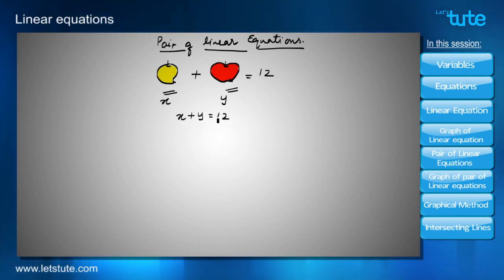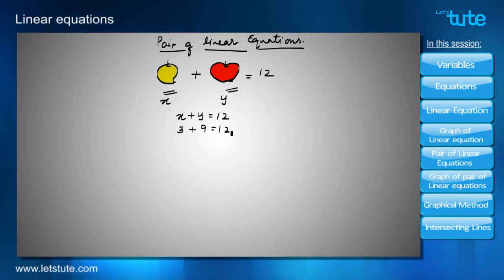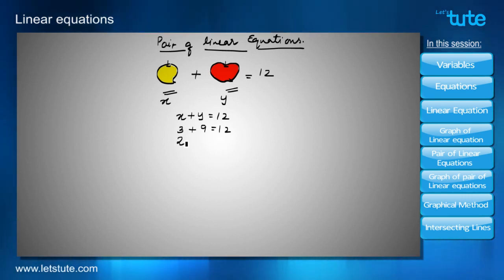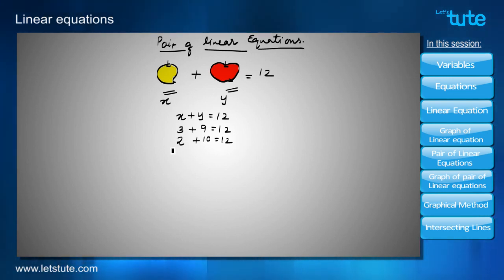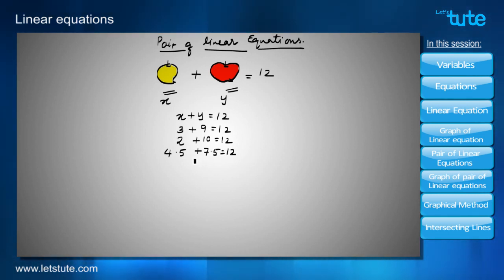Since I don't know the individual prices, I can assume many values for x and y that give a total of 12. For example, if the price of one mango is 3 rupees, then the apple has to be 9 rupees. If mango is 2 rupees, apple has to be 10 rupees. Similarly, if mango is 4.5 rupees, apple has to be 7.5 rupees — and so on.